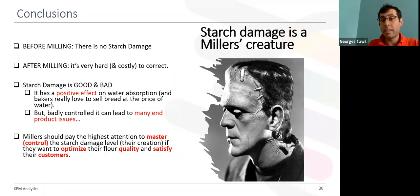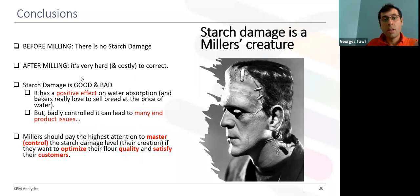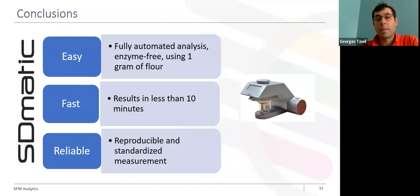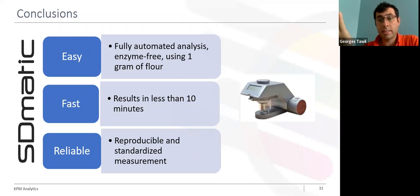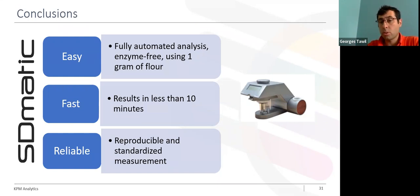My recommendation for millers is that they should pay the highest attention to controlling starch damage, just as they control protein content and ash content. Starch damage is really very critical — it has many consequences, so they need to control it to optimize flour quality and satisfy their baker customers. I proposed the SD-MATIC because it is an easy, fully automated, enzyme-free procedure requiring only one gram of flour. The SD-MATIC is fast — results in less than 10 minutes — reliable, proven to be repeatable and reproducible, and standardized by different organisms.